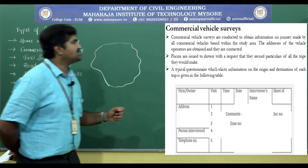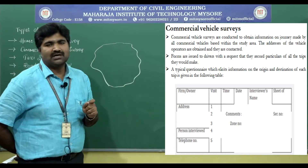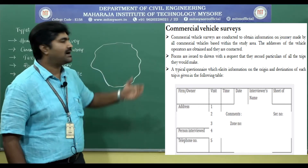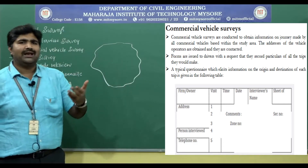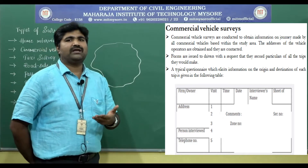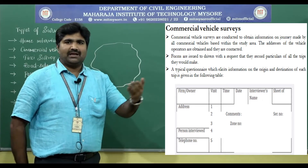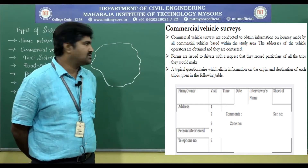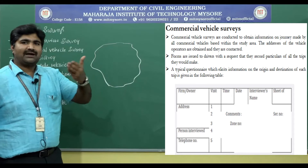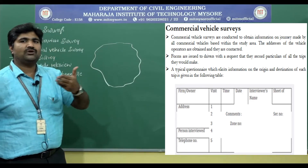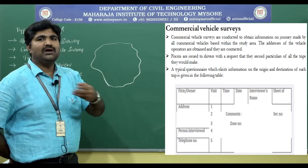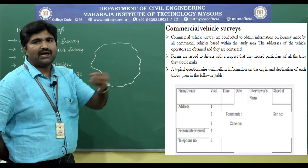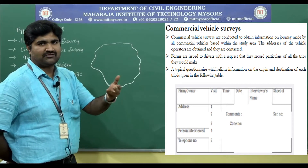The addresses of the vehicle operators are obtained and they are contacted. We get these addresses by contacting the RTO, that is the Regional Transport Office. With the help of RTO we can get the addresses of the vehicle operators. Commercial vehicles may be light commercial vehicles or heavy commercial vehicles — goods-carrying vehicles such as luggage-carrying autos, trucks, single axle trucks, dual axle trucks, and multi-axle trucks which carry loads.